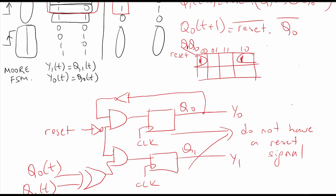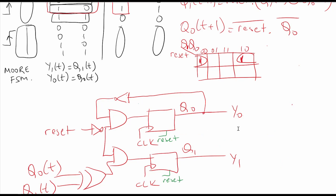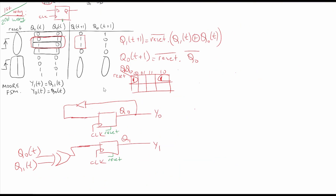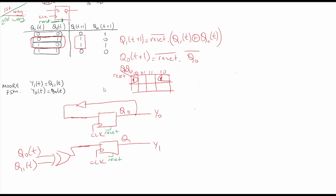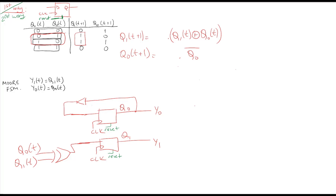The flip-flops in the first design do not have a reset signal. For the second method, the reset signal connects directly to the flip-flops. Removing reset from the state table leaves only four possibilities, and the next state logic simplifies significantly: Q0(t+1) = NOT Q0(t). This makes the second way much simpler than the first.